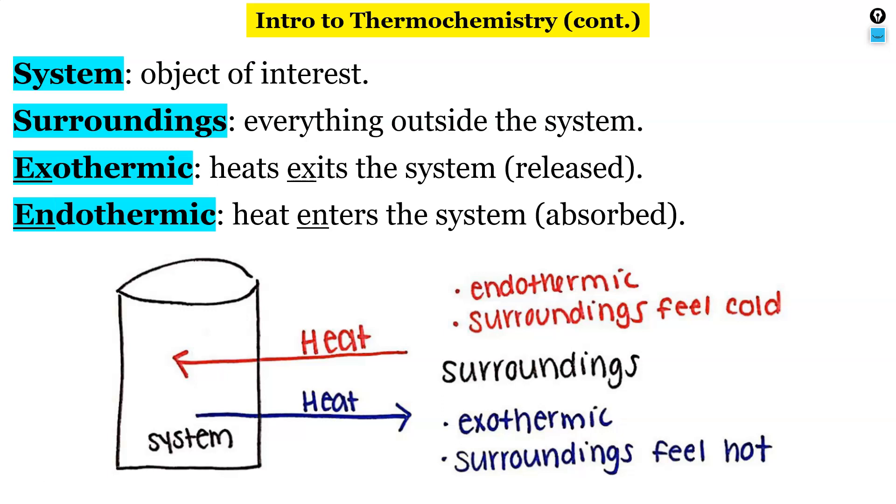Exothermic is when heat exits the system, heat energy is released. Endothermic is where heat energy enters the system, so heat energy is absorbed. An easy way to remember this: exo exit, endo enter.